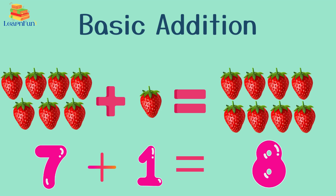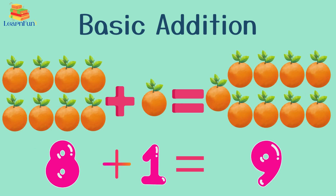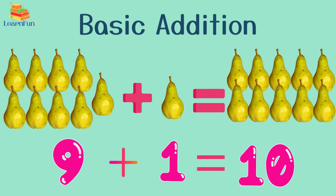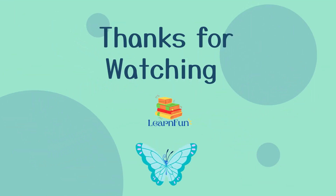...plus one strawberry equals eight strawberries. Eight oranges plus one orange equals nine oranges. Nine pears plus one pear equals ten pears. Thanks for watching.